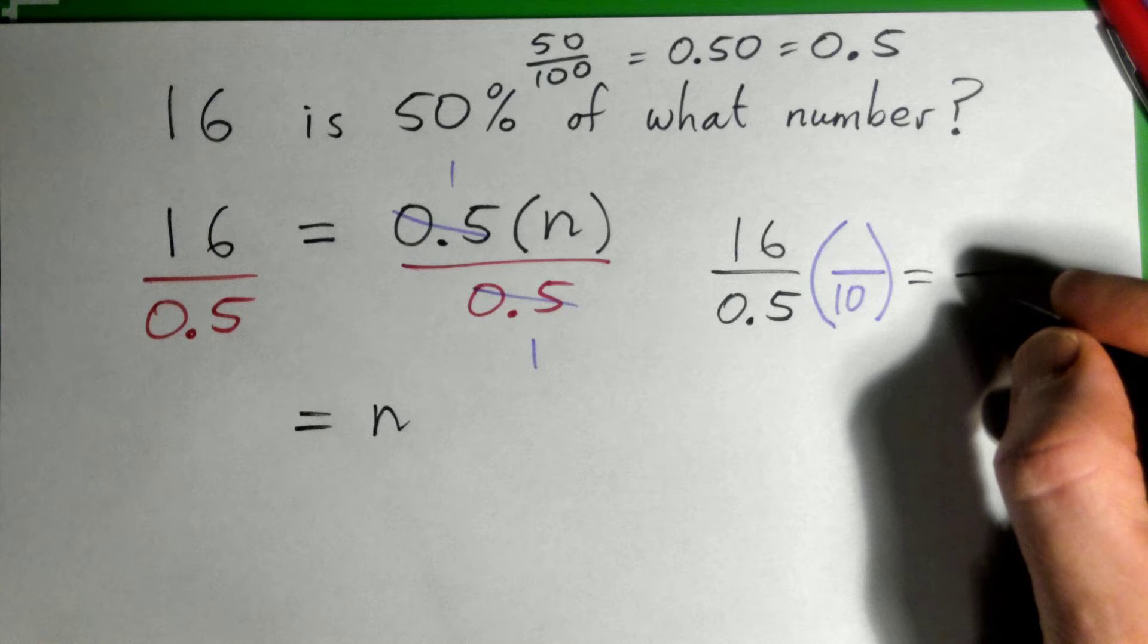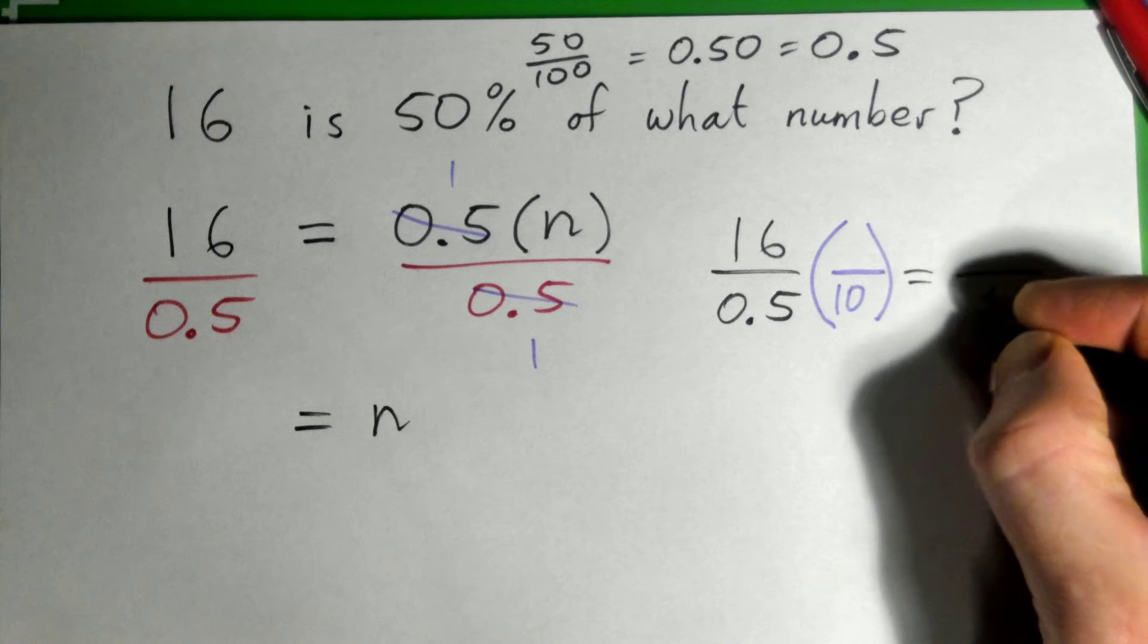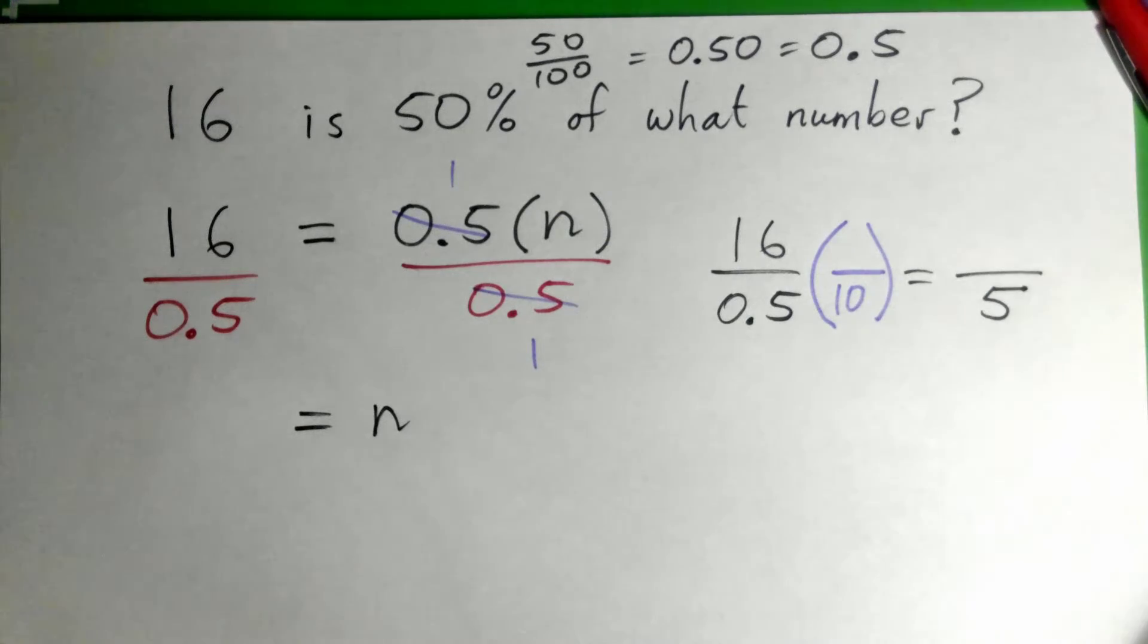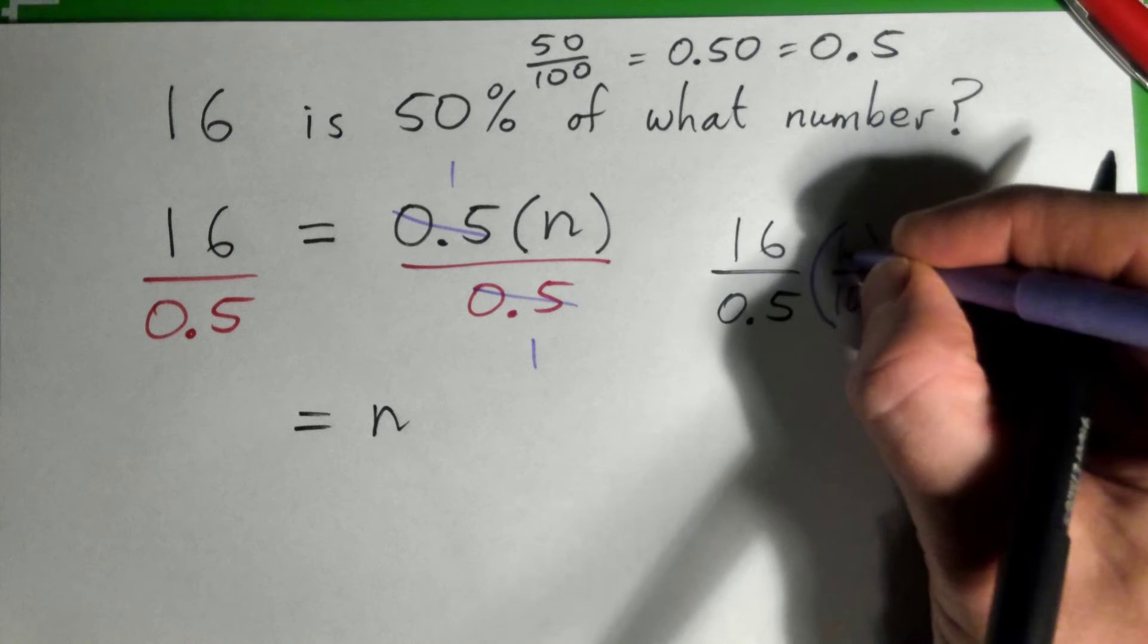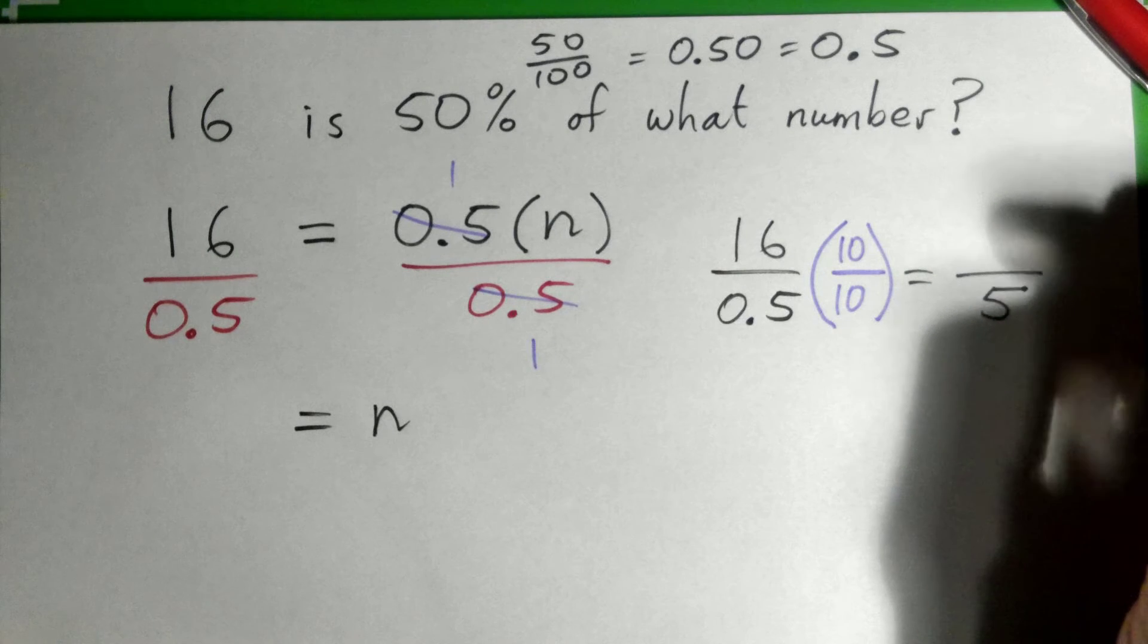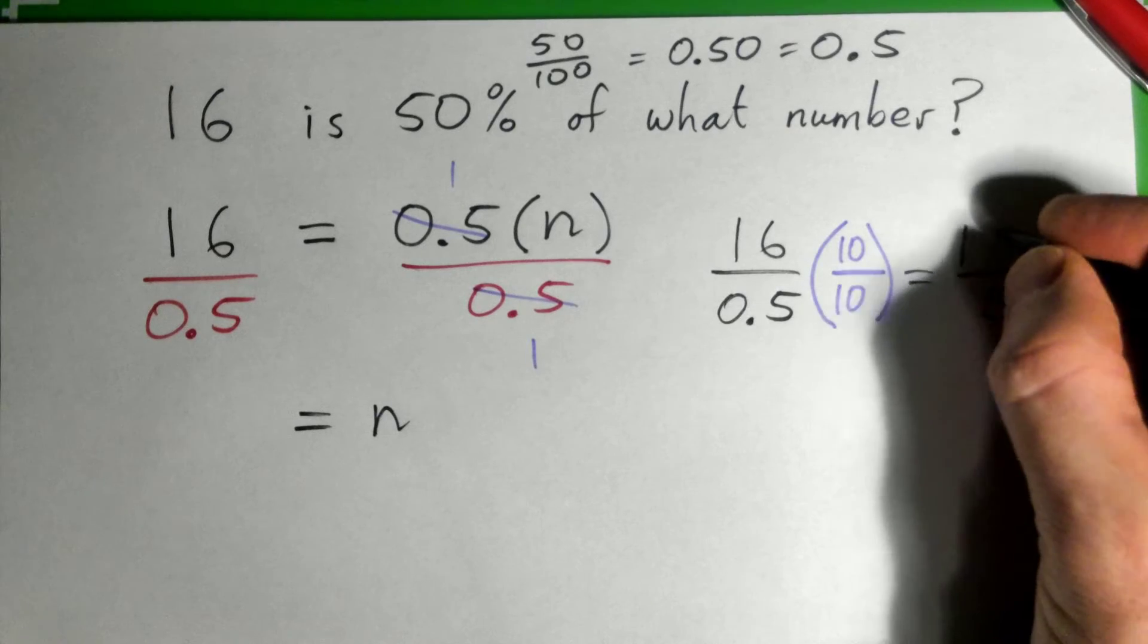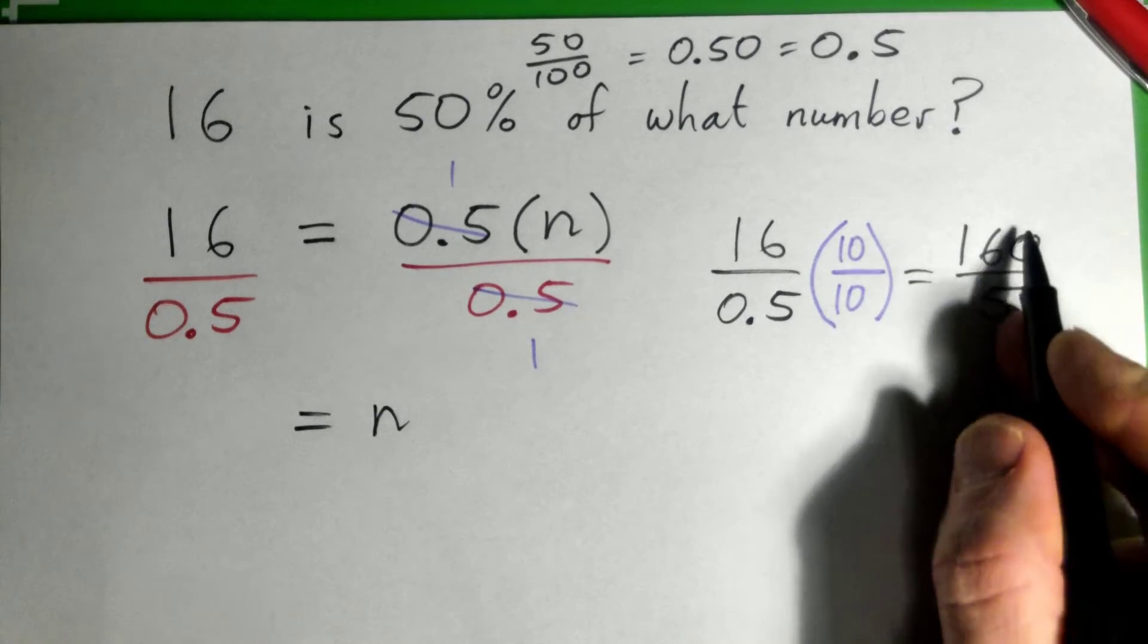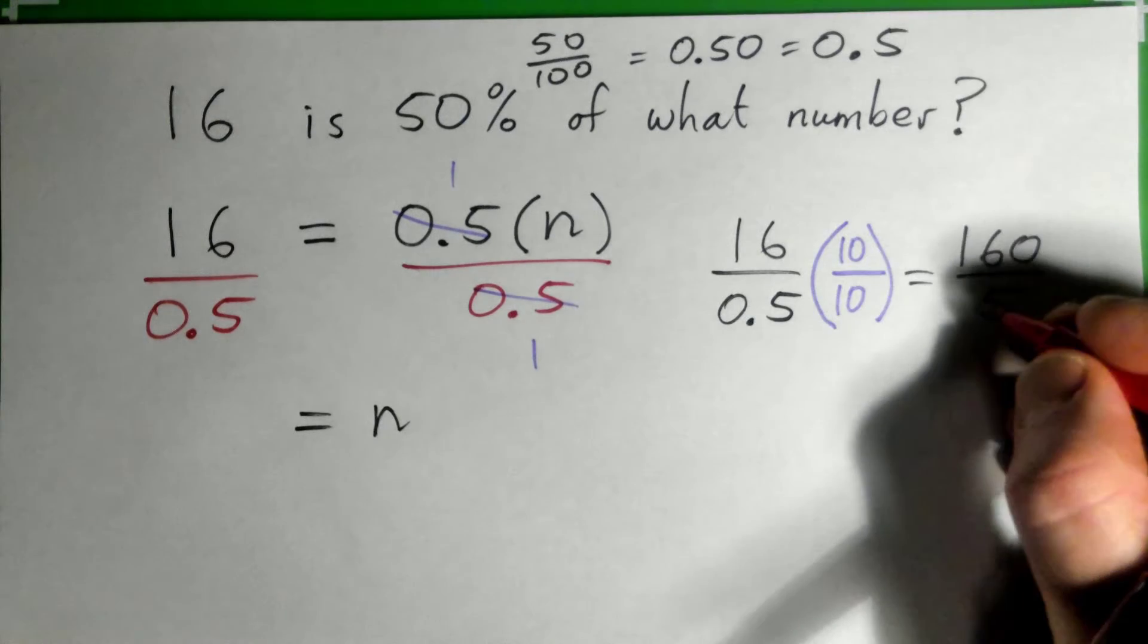Yeah, quite good. And you've got to multiply top by 10 as well. Top by 10 we get 160, so it's 160 over 5.